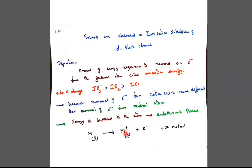From Na⁺, if you remove one more electron, it becomes Na²⁺. It requires 5000 kilojoule per mole of energy to remove one electron from the ionized part. So it is about 10 times greater.